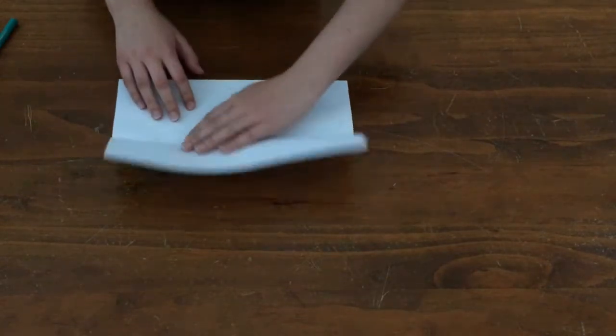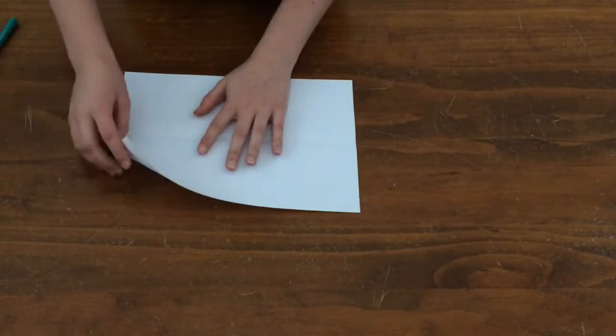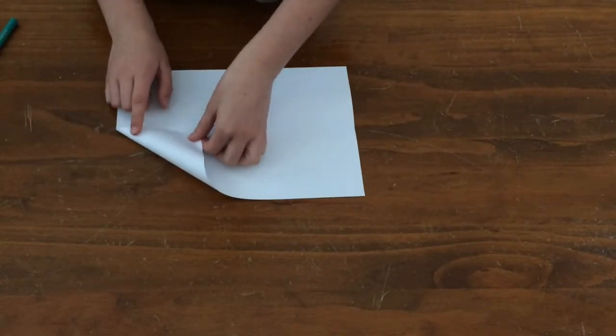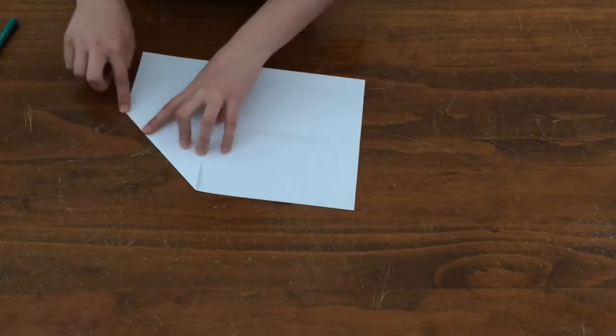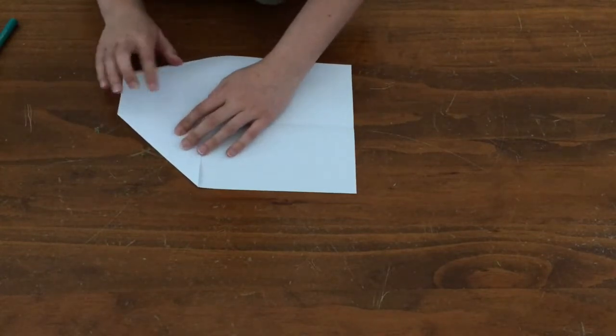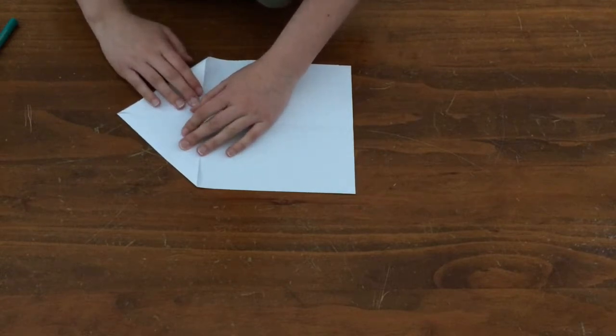Then you would like to open up your piece of paper and grab the corner and pull it down until it meets the crease. Grab the other corner and repeat the same step.